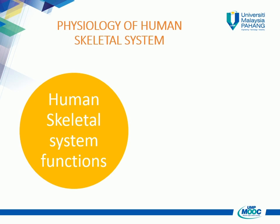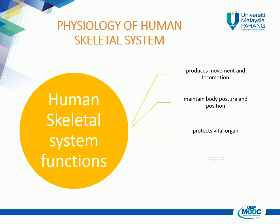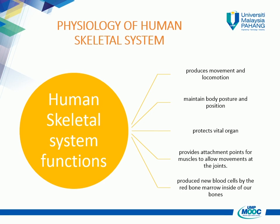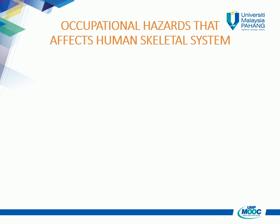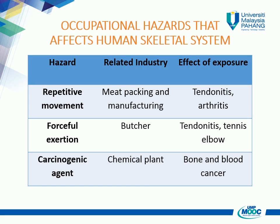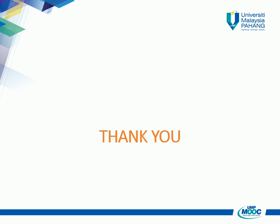The functions of the human skeletal system include: producing movement and locomotion; maintaining body posture and position; protecting vital organs; providing attachment points for muscles to allow movement at the joints; and producing new blood cells by the red bone marrow inside our bones. Repetitive movement and forceful exertion, as found in meatpacking and manufacturing, can cause tendonitis and arthritis, or tendonitis and tennis elbow. Effects of carcinogenic chemicals can cause bone and blood cancer.